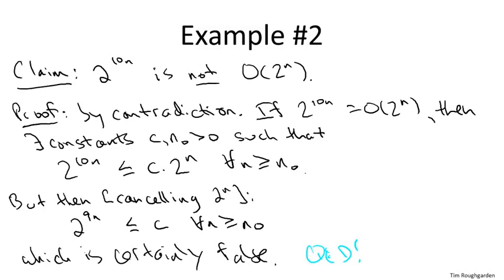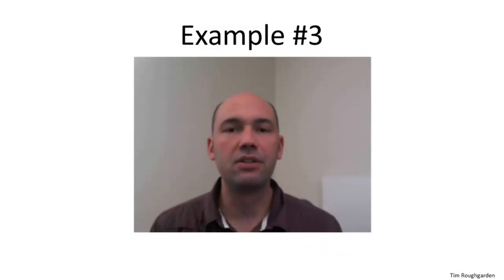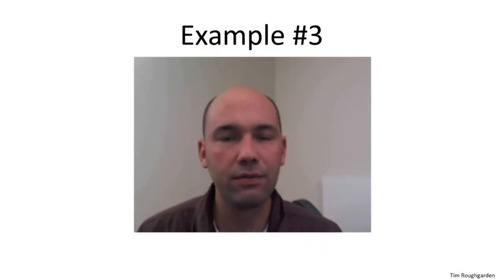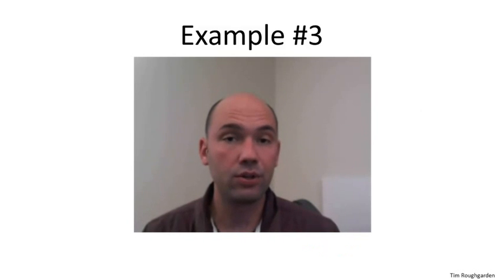This means our assumption was not the case, and indeed it is not the case that two to the ten n is big O of two to the n. So our third and final example is a little bit more complicated than the first two. It'll give us some practice using theta notation.